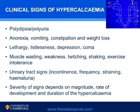Muscle wasting, weakness, twitching, shaking, and exercise intolerance occur because muscle contracts poorly in hypercalcemia. In some cases, urinary tract signs may also be present. Apart from urinary incontinence associated with polyuria, there may be frequency, straining, and hematuria due to uroliths within the urinary tract. The severity of signs depends on the magnitude, rate of development, and duration of the hypercalcemia — longer-term hypercalcemia tends to produce worse clinical manifestations.